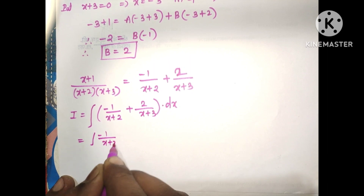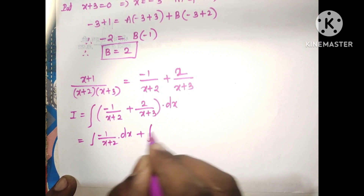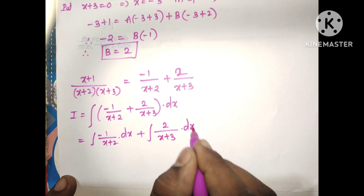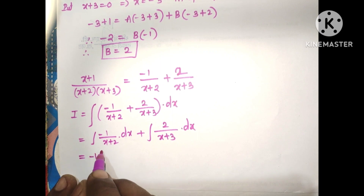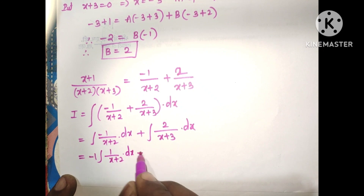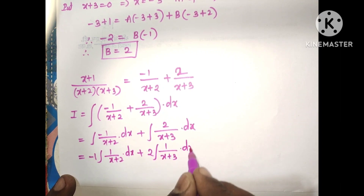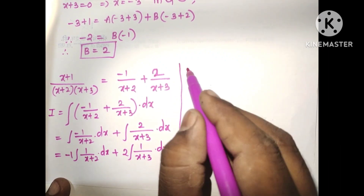Separating the integrals: integral of minus 1 divided by x plus 2 into dx, plus integral of 2 divided by x plus 3 into dx. Taking constants outside: minus 1 times integral of 1 divided by x plus 2 into dx, plus 2 times integral of 1 divided by x plus 3 into dx.